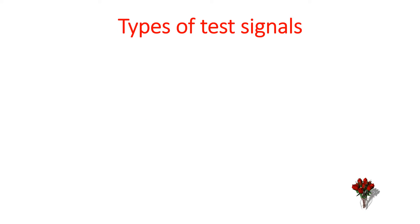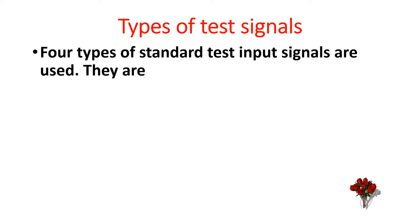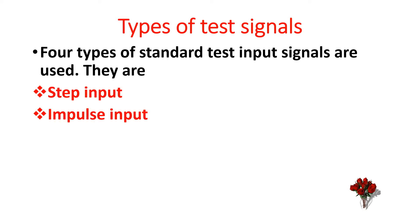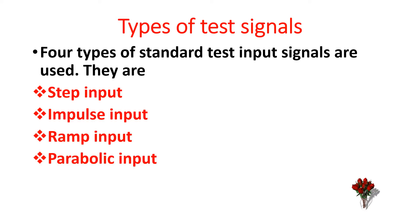Types of test signals. Four types of standard test input signals are used. They are: step input, impulse input, ramp input, and parabolic input.